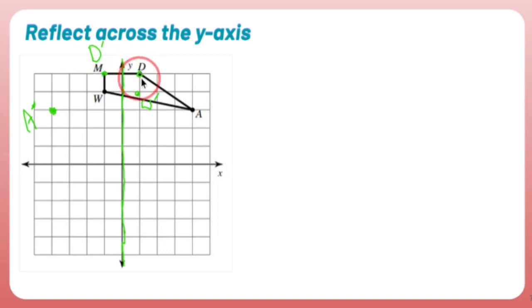So M prime is also going to be one unit away from the mirror. So we take that, we connect the dots the best that we can, and as you can see we have the exact same image just kind of flipped.